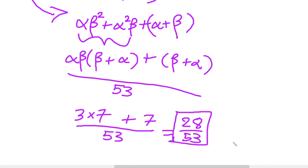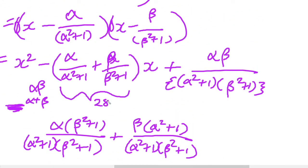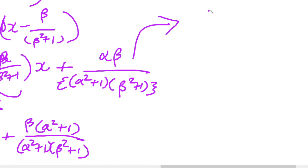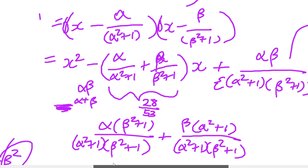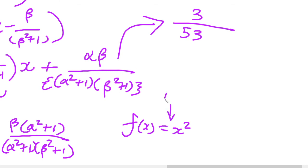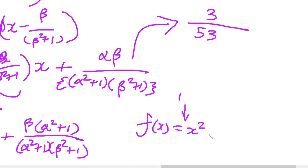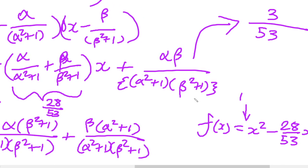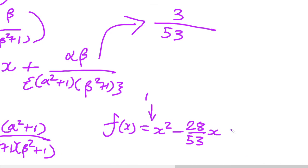That's one term. And the constant term is αβ/((α²+1)(β²+1)) = 3/53. So our final answer is f(x) = x² − (28/53)x + 3/53.